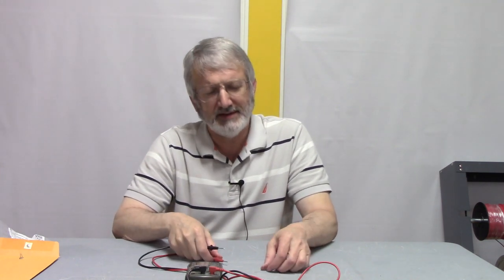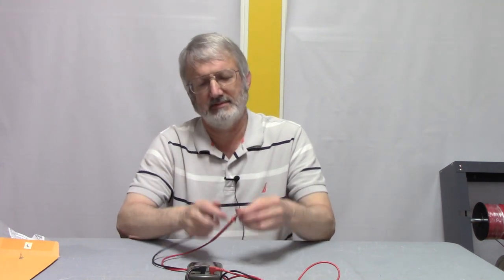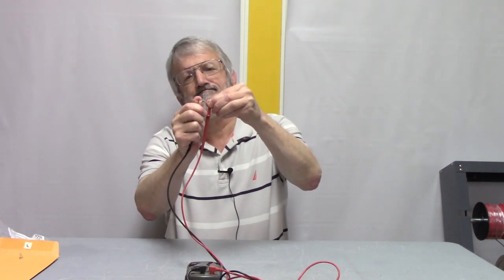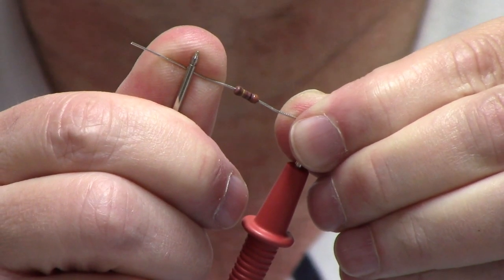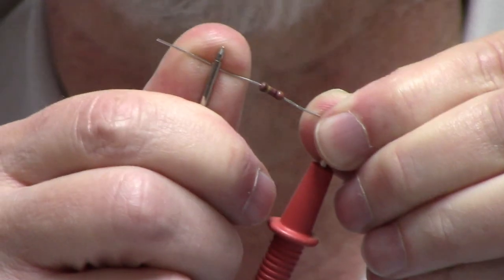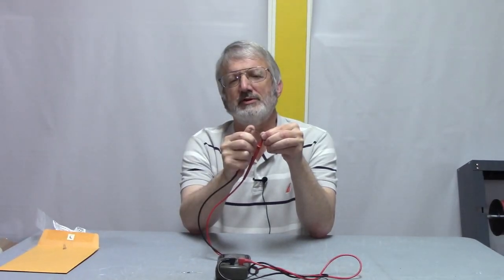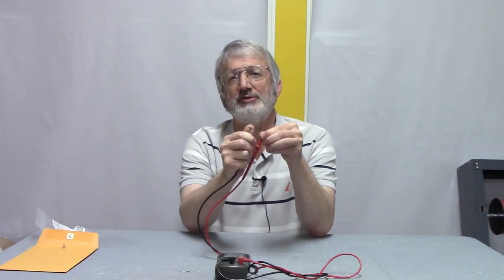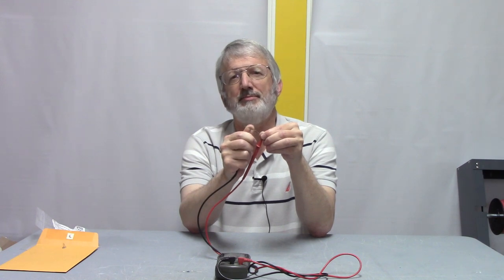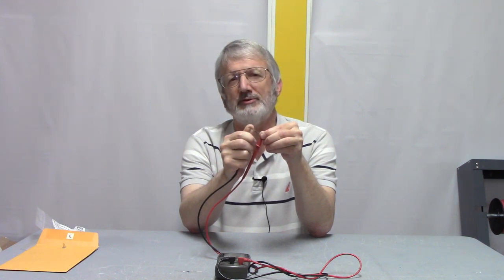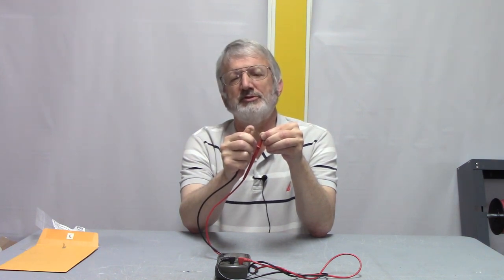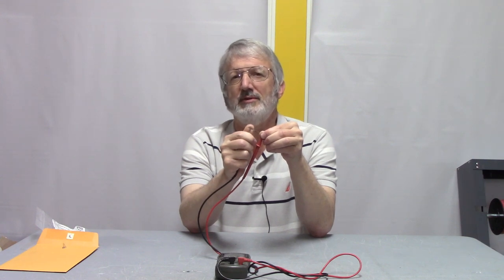Well, it turns out that when you measure it like this with your fingers across it, the resistance of your body is in parallel with the resistor that you read. And if the resistor has a pretty high value, then your body resistance makes a big difference to the reading. Let's see how much.